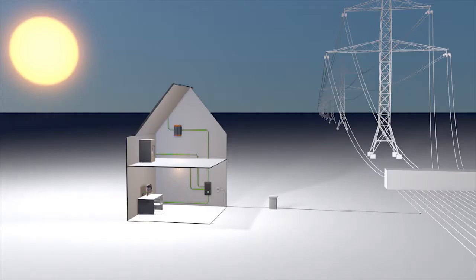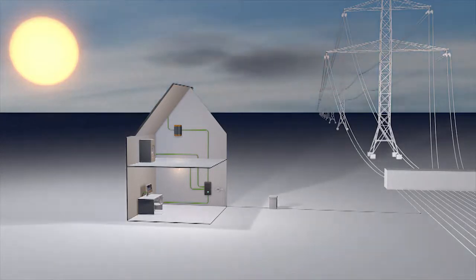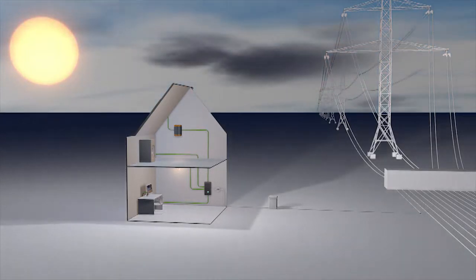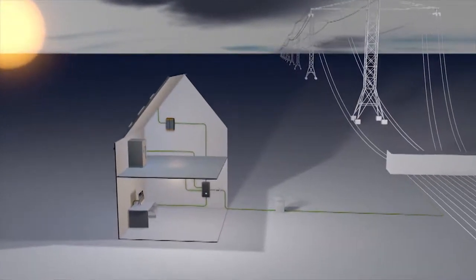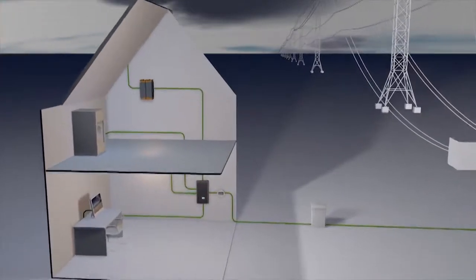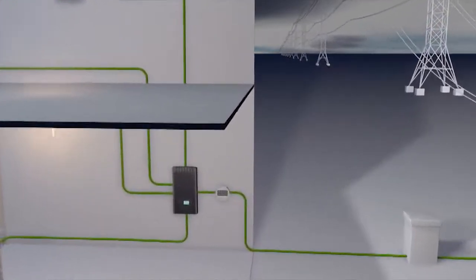On the other hand, on a cloudy day, the PV system is providing less power than what the load is expecting. Under such a condition, the load demand is fulfilled by taking the excess power from the grid. Thus, the net meter registers a net consumption as well.